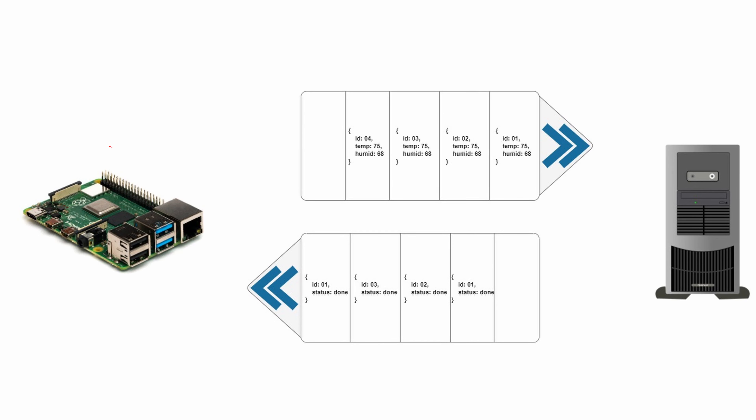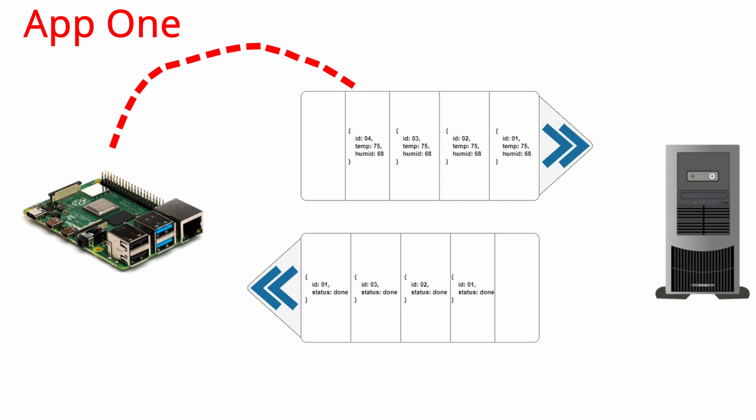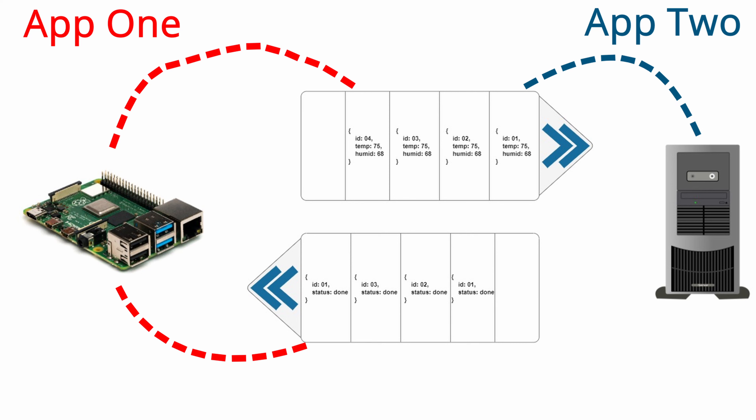The second way that a JMS queue is usually configured is as a request-reply. This is where one application — let's call it app 1 — pushes data into a queue, but it also wants a response back just like an HTTP request. It will publish data, but it will also start consuming from a separate queue. App 2 will consume the data from the first queue, process it, and then push the result into the queue that app 1 is consuming from. This essentially copies the way that HTTP allows you to send a request and get a response.